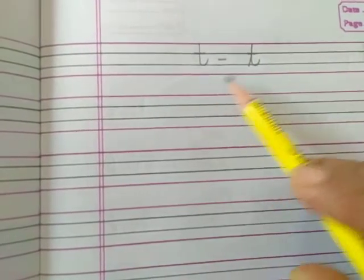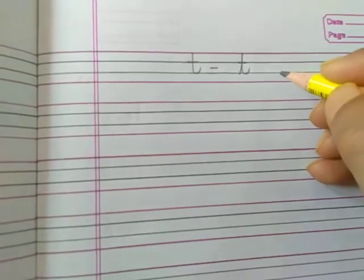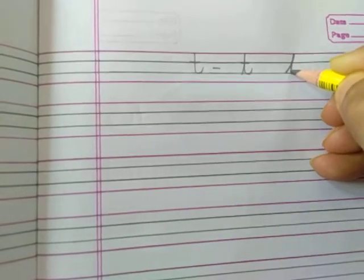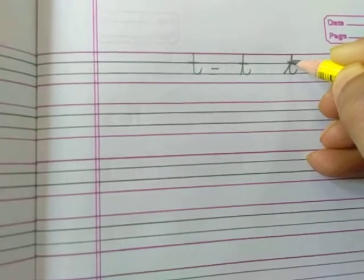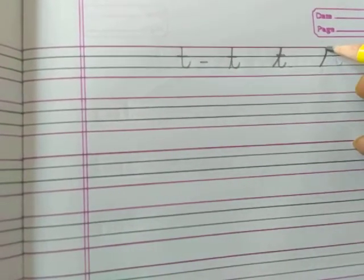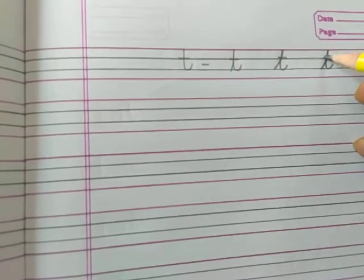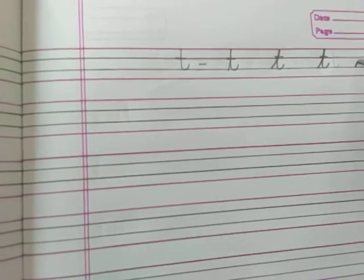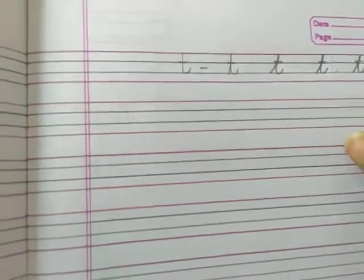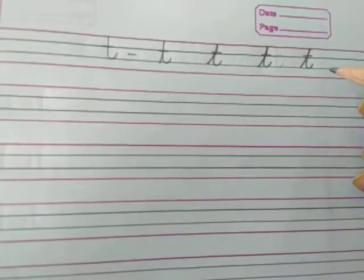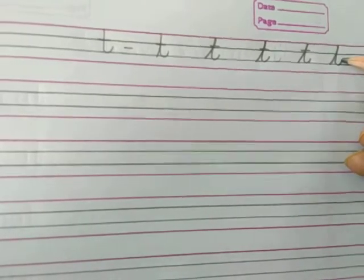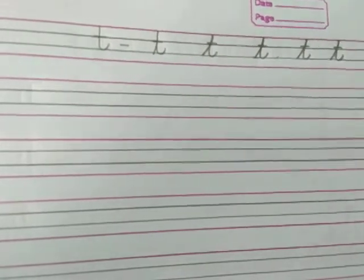Now see, this is letter T. The simple way to write letter T is: you have to go slanting up, a little slanting up, and following the same line you have to come down, touch the third line, and a sleeping line here. This is letter T. Go up, trace the same line and come down, a little curve, sleeping line. Touch the third line, a little up, and a sleeping line. This is cursive letter T.